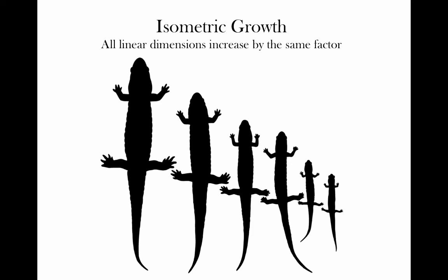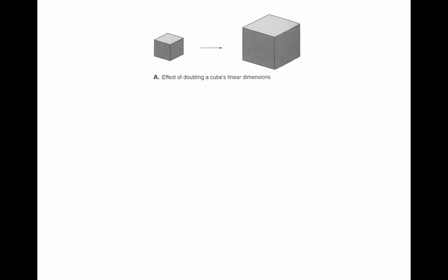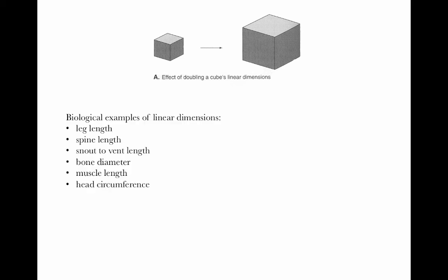To understand why, let's start with an isometrically scaled very simple shape like a cube, and look at the effect of doubling a cube's linear dimensions. Examples of linear dimensions in biology include leg length, the length of the vertebral column, snout to vent length, bone diameter, muscle length, and circumference such as head circumference. In isometric growth, if one of these things increases by a certain factor, all of the others also increase by the same factor.